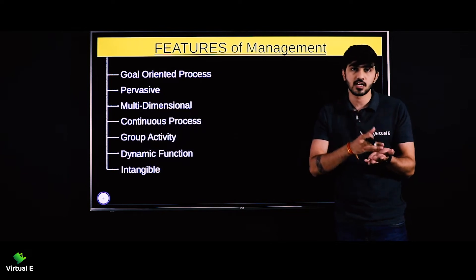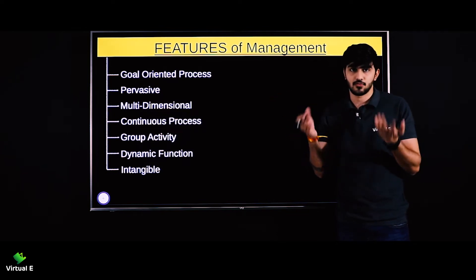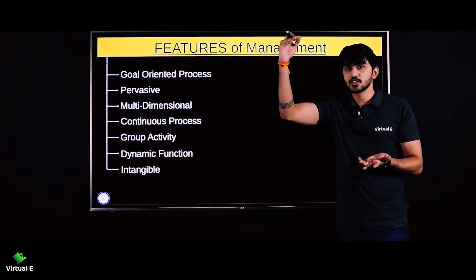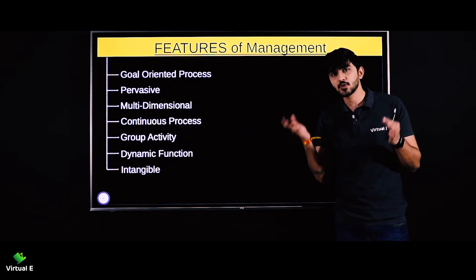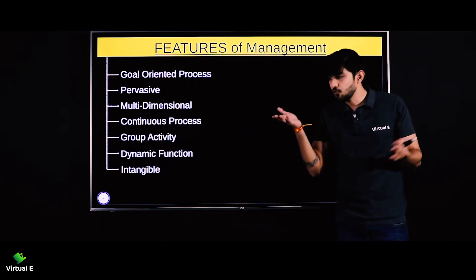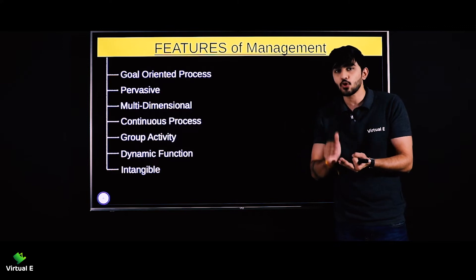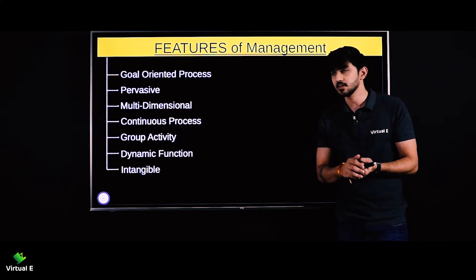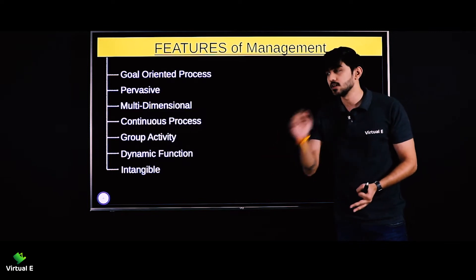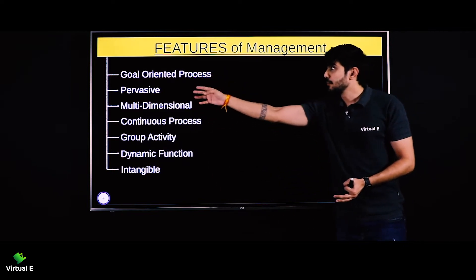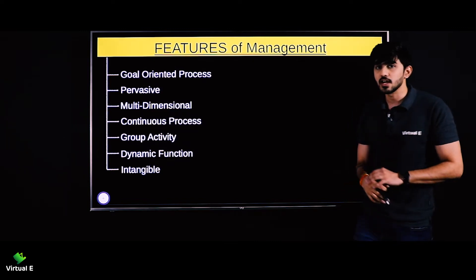Kya aapko aisa lagta hai top level management ko koi kaam nahi hota? Of course hota hai — plans banana, policies banana. Middle level management mein koi kaam nahi hota? Of course hota hai — top level management ke jo orders hain wo lower level pe convey karna. Lower level ke paas koi kaam nahi hota? Of course hota hai — wo kaam karna, wo plan, wo objective, wo policy follow karna. So management is pervasive — it is present everywhere.